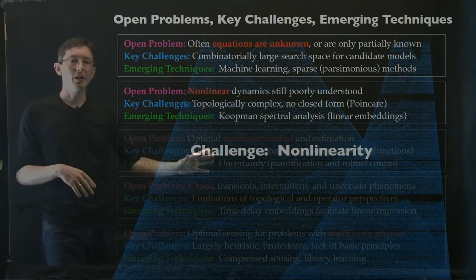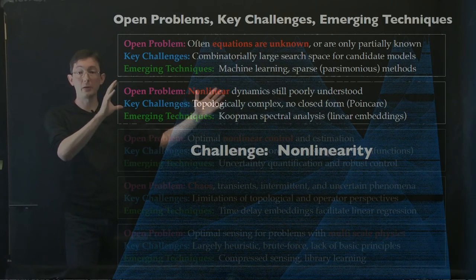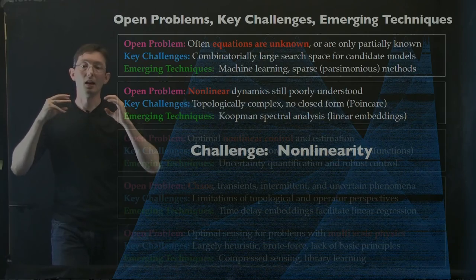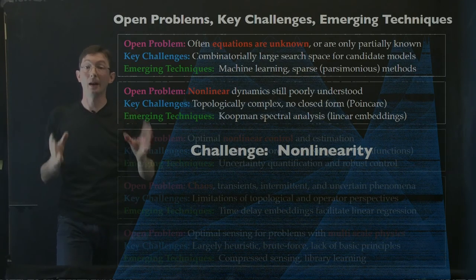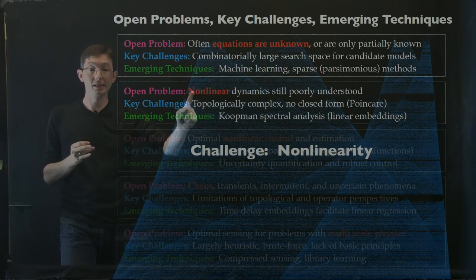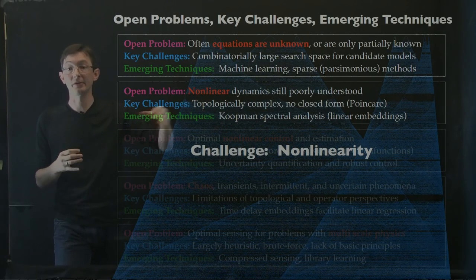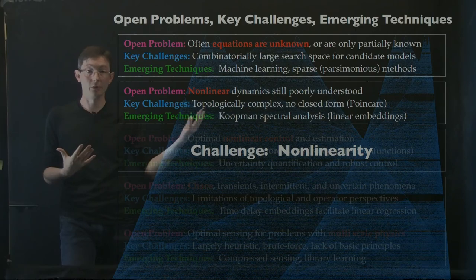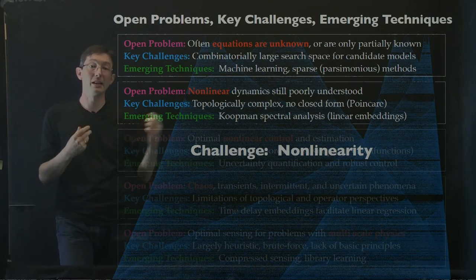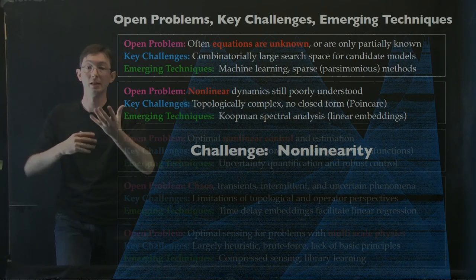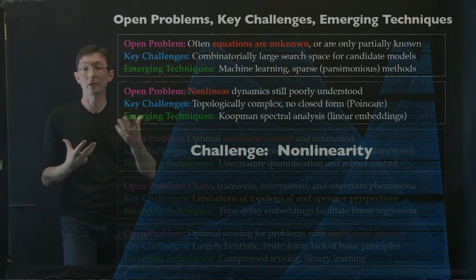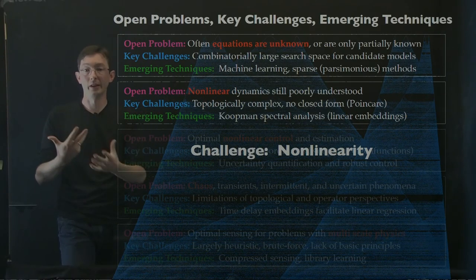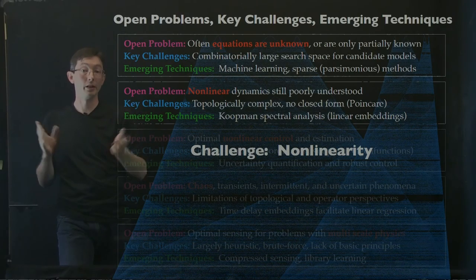I'm going to focus on nonlinearity — that's really where Koopman analysis has the most obvious ability to impact. Koopman analysis is basically a coordinate transformation into some special measurement coordinates where nonlinear systems look linear, and we can use our textbook linear analysis on those strongly nonlinear systems.